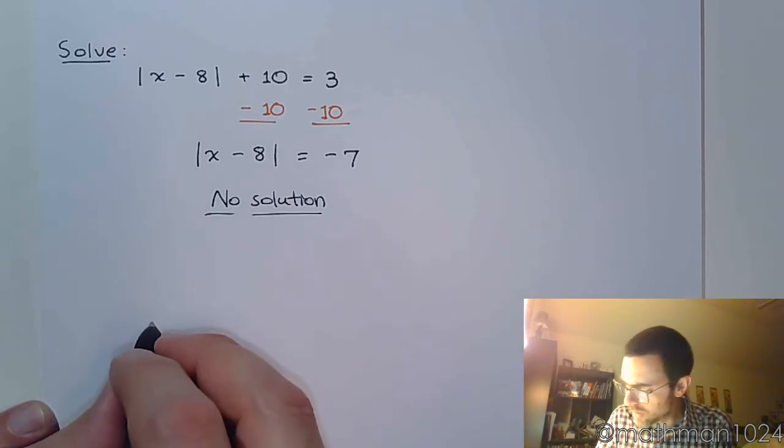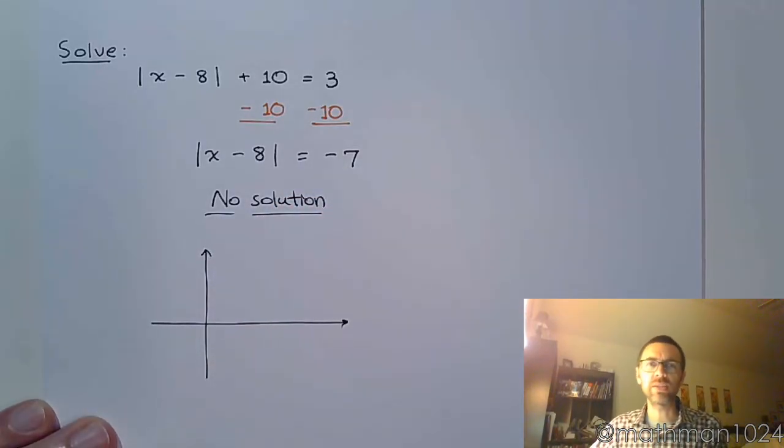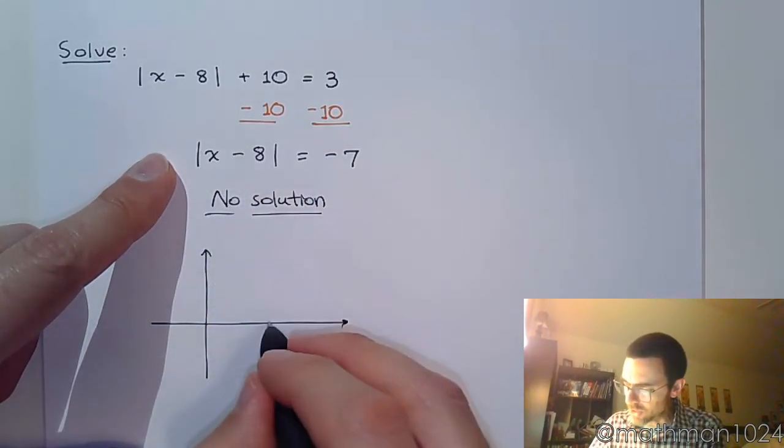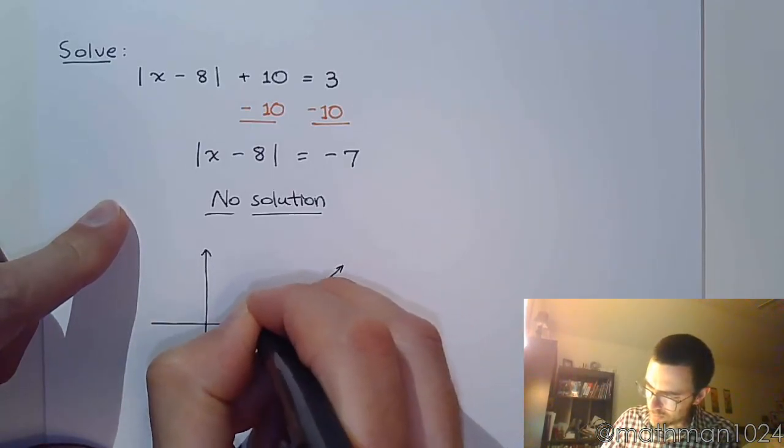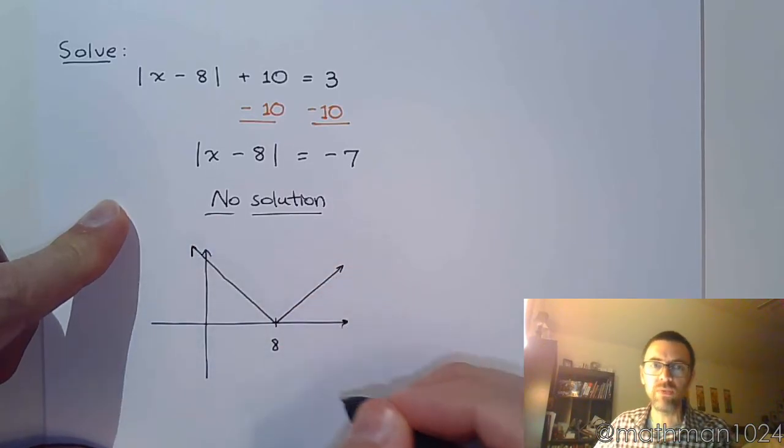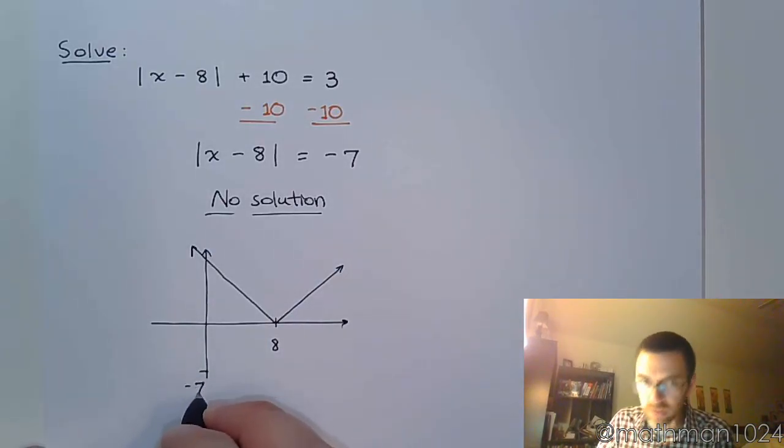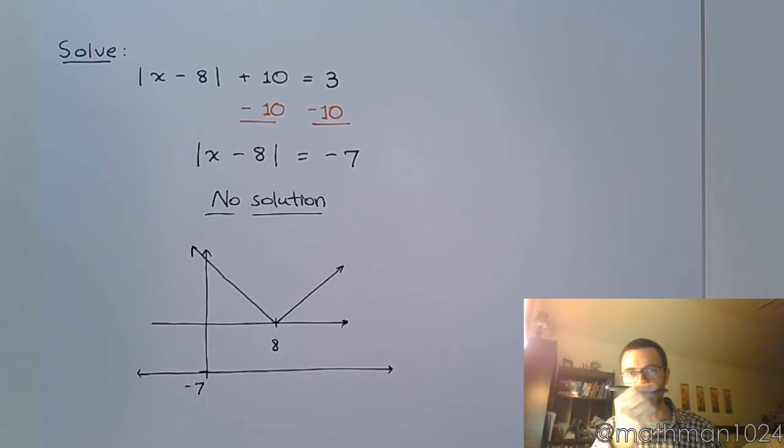And think about the graph. So if I do a quick sketch of what the graphs look like, the left and the right hand sides - actually I'm just going to focus on this guy right here. So this piece right here is going to be shifted to the right 8 units, and it's going to have that classic V shape. The other side of this equation is negative 7, so negative 7 is down here. I've got that V shape, I've got that horizontal line. But where do they intersect? Well, they don't intersect. And if they don't intersect, then we would say there is no solution.